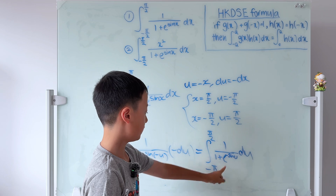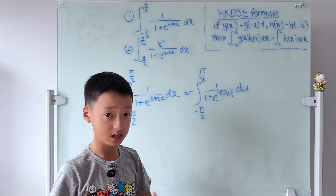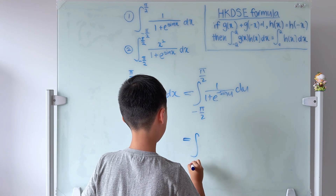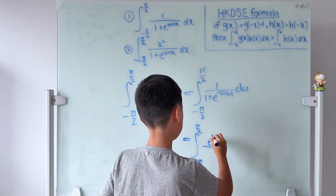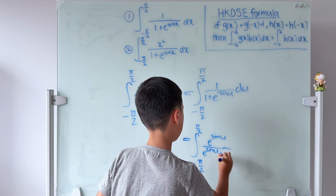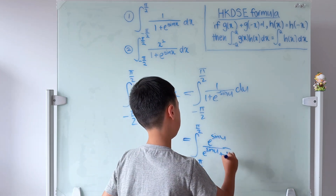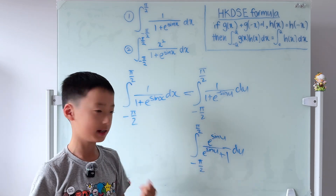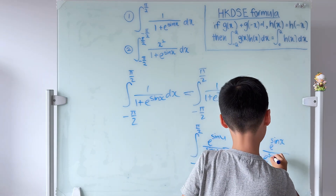I'll manipulate the right-side integral by multiplying e^(sin u) on the top and bottom. It becomes the integral from −π/2 to π/2 of e^(sin u) over (e^(sin u) + 1) du. Changing u back to x, this is the integral from −π/2 to π/2 of e^(sin x) / (e^(sin x) + 1) dx.